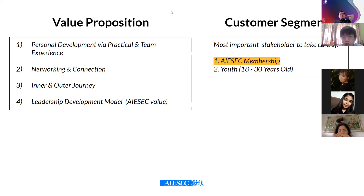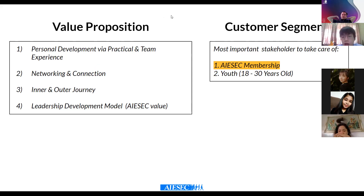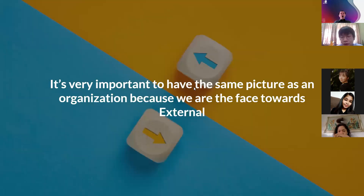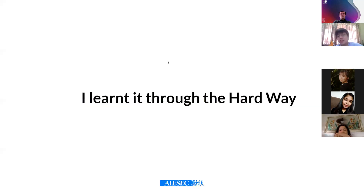In the chat, some groups prioritized youth membership and others prioritized partners. I'll be sharing more later so you can see who you think is the most important beneficiary. One important message: we need to have the same picture as an organization because we face the external world. Imagine each of us delivering different messages to partners - that would be confusing. It's good that we align together as an organization. I actually learned this through the hard way. When I was doing sales, I thought we needed to prioritize partners, but in the end, it always comes back to youth because AIESEC is a youth organization.